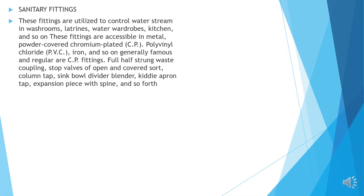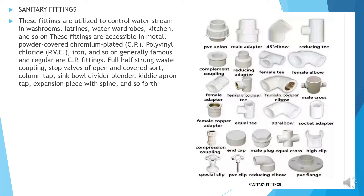Sanitary fittings: these fittings are utilized to control water supply to washrooms, latrines, water wardrobes, kitchen and so on. These fittings are accessible in metal, powder-coated, chromium-plated (CP), polyvinyl chloride (PVC), iron, etc. Generally popular CP fittings include: full off-threaded waist coupling, stop valves of open and covered shot, column tap, sink bowl wall mixer, Kiddy apron tap, expansion piece with flange, etc. These are all images of the various sanitary accessories.